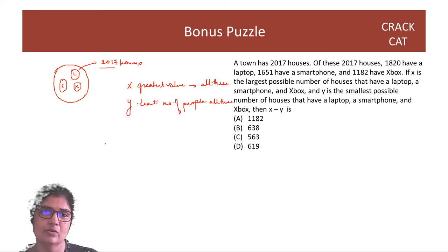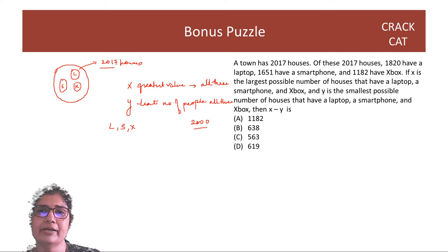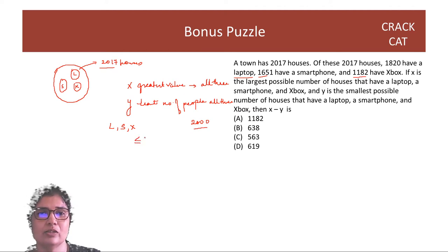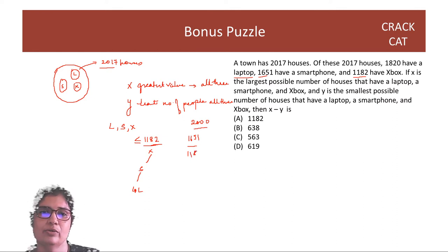To find the greatest number of people having all three things — they have a laptop, a smartphone, and an Xbox — can I say all three people will be 2000? No, because already only 1820 have a laptop, only 1651 have a smartphone, and only 1182 have an Xbox. So the number of people having all three has to be less than or equal to the smallest of the three numbers, which is 1182. That's why we pick the smallest — 1182 will be the maximum value.